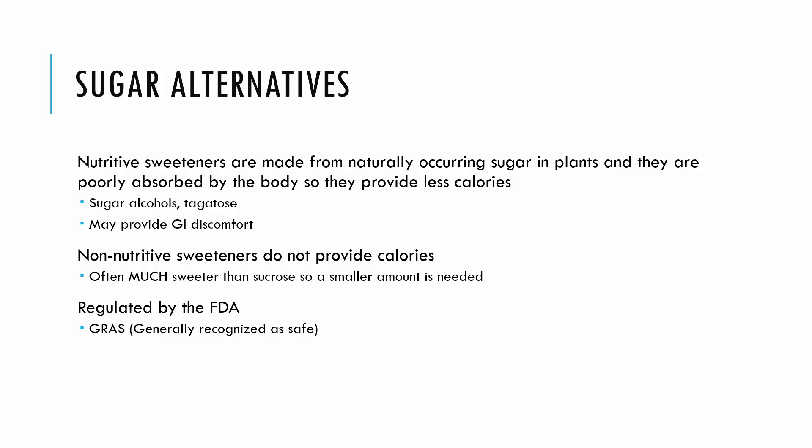People always have questions about sugar alternatives. Nutritive sweeteners are made from naturally occurring sugar in plants that are poorly absorbed, so they provide fewer calories than regular sugar — these include sugar alcohols like sorbitol, mannitol, and xylitol. However, we have to watch out for GI discomfort with sugar alcohols. For example, eating an entire box of sugar-free chocolates could cause GI discomfort, so we do need to watch the amount consumed.